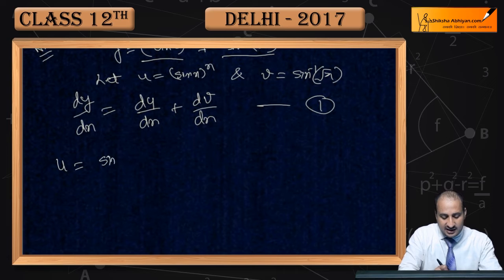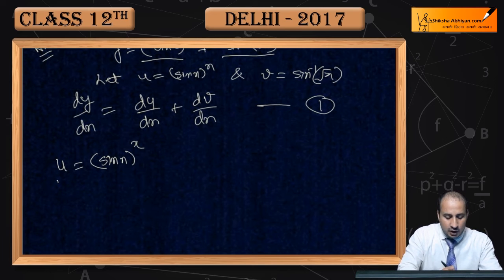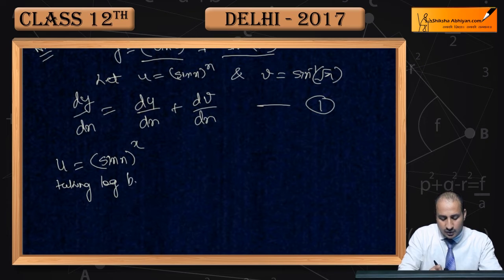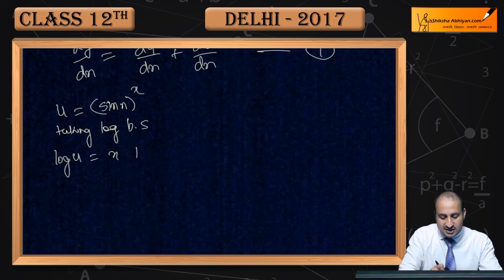Sabse pehle u ke paas chalte hain. U jo aapko diya hai: u = sin(x)^x. Ab yeh function to the power function hai, to yahan solve karne ke liye log lena hoga. Taking log both sides: log u = x · log(sin x).